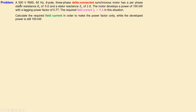We have a 500 volts RMS, 60 Hz, 8-pole, 3-phase delta connected synchronous motor. It has a stator resistance of 0 ohms, so there is no stator resistance. There is a stator reactance of 2 ohms, and the motor develops a power of 100 kilowatts with a lagging power factor of 0.77. For this condition we also require a field current of 9 amperes.